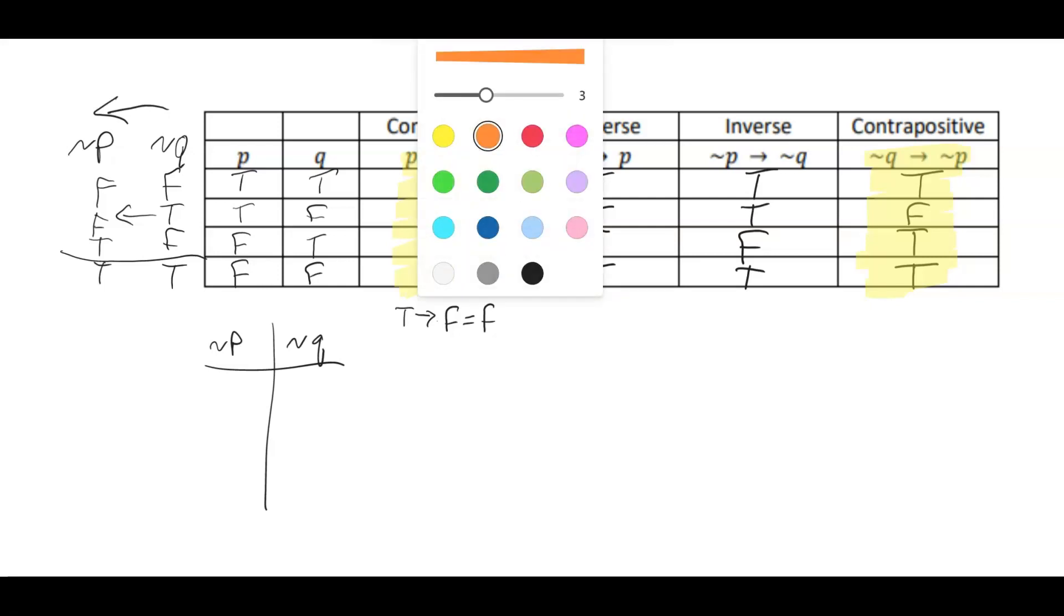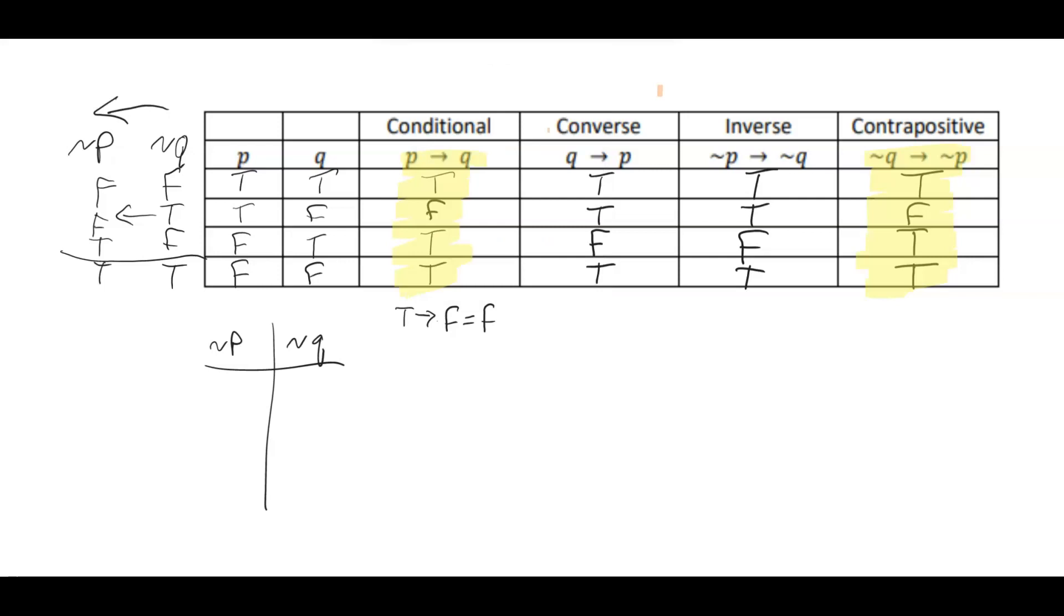And similarly, the converse Q implies P is equivalent to not P implies not Q, the inverse. So you now have a choice. If you want to directly show that P implies Q, you could also show that not Q implies not P. And the converse and inverse, if you want to show that Q implies P, you can do not P implies not Q, and it's the same proof. Prove one, you get the other is true. So you can show equivalency of statements with a truth table if you get the exact same pattern of true-falses for those statements. I hope this makes sense.